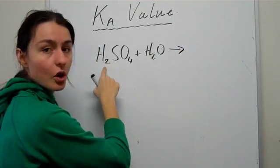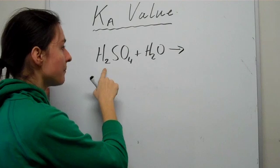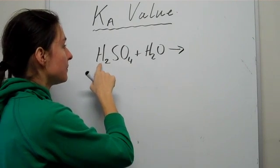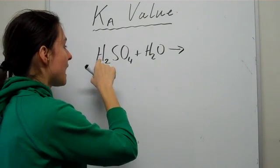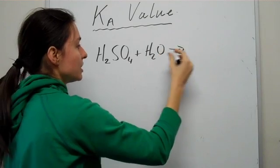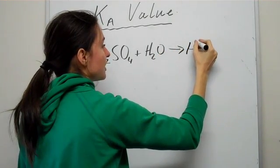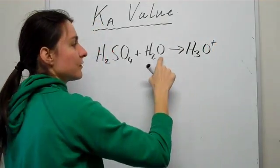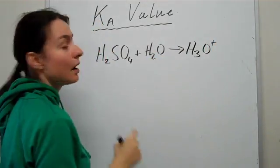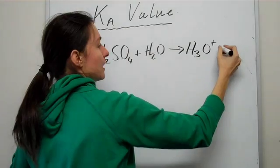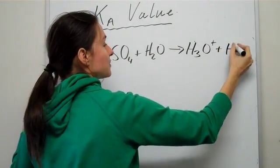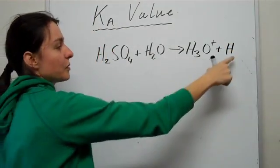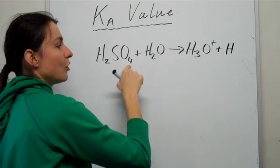All of it will actually become ionized because a hydrogen will go off to water and it will produce H3O plus. That's because the water accepted a hydrogen. That will become H, because there's two there, there will be one left—HSO4 minus.